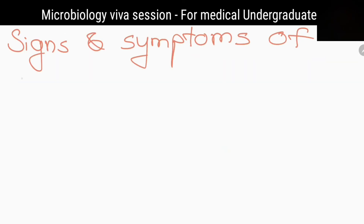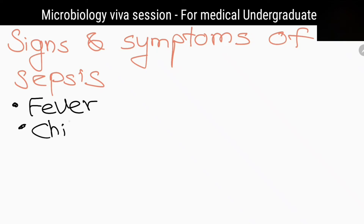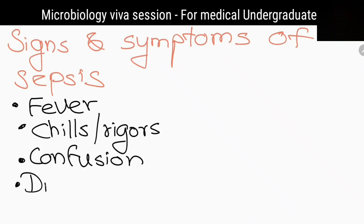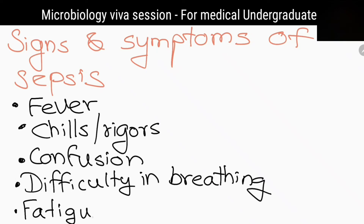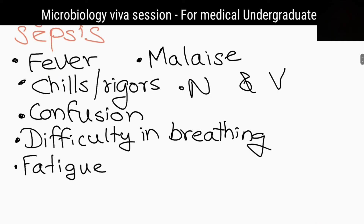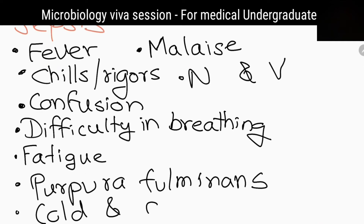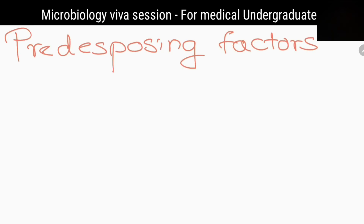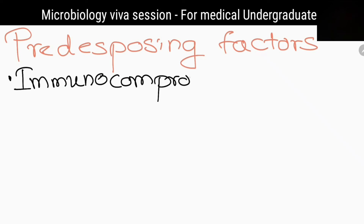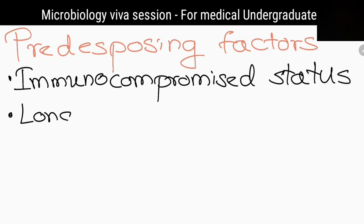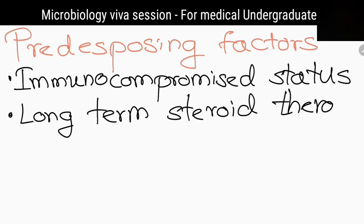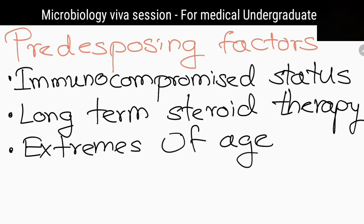What are the signs and symptoms of sepsis? Fever, chills and rigors, confusion, difficulty in breathing, fatigue, malaise, nausea and vomiting. What are the predisposing factors of sepsis? Immunocompromised status, long-term steroid therapy, diabetes mellitus, multidrug-resistant infections, and extremes of age.